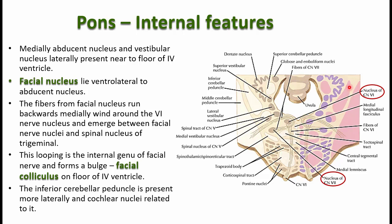More laterally, you are able to see the inferior cerebellar peduncles. Immediately in front of the inferior cerebellar peduncle is the spinal nucleus and tract of the trigeminal nerve. The dorsal and ventral cochlear nuclei will be intimately related to the inferior cerebellar peduncle.